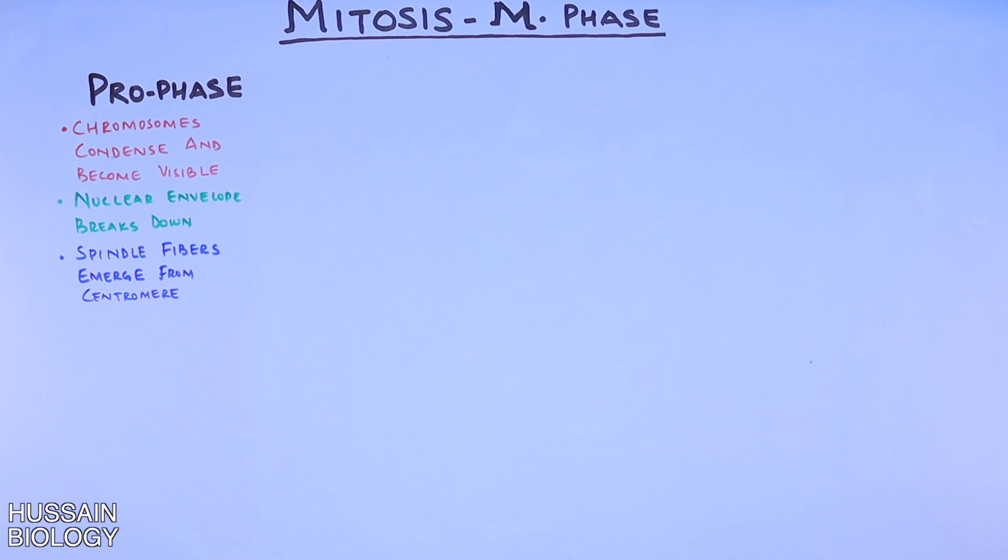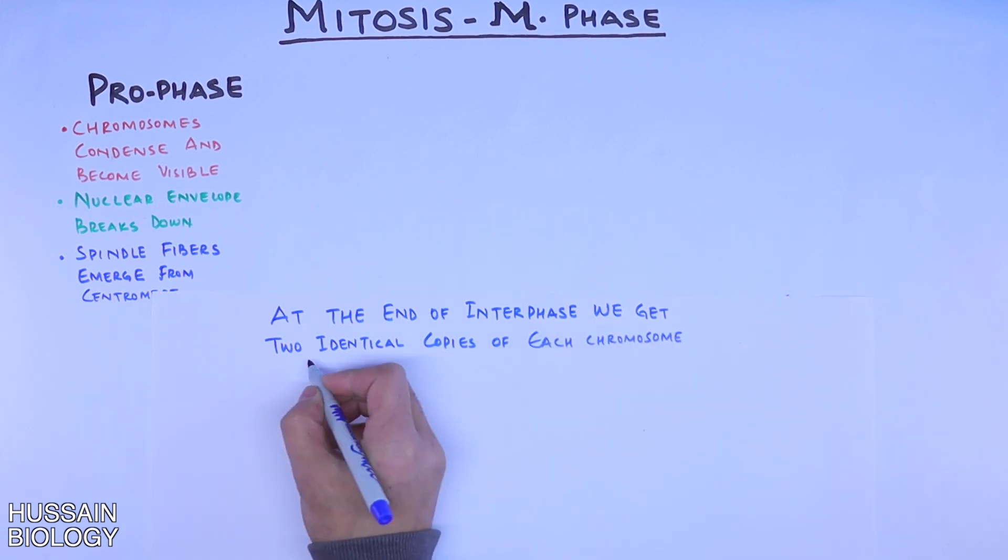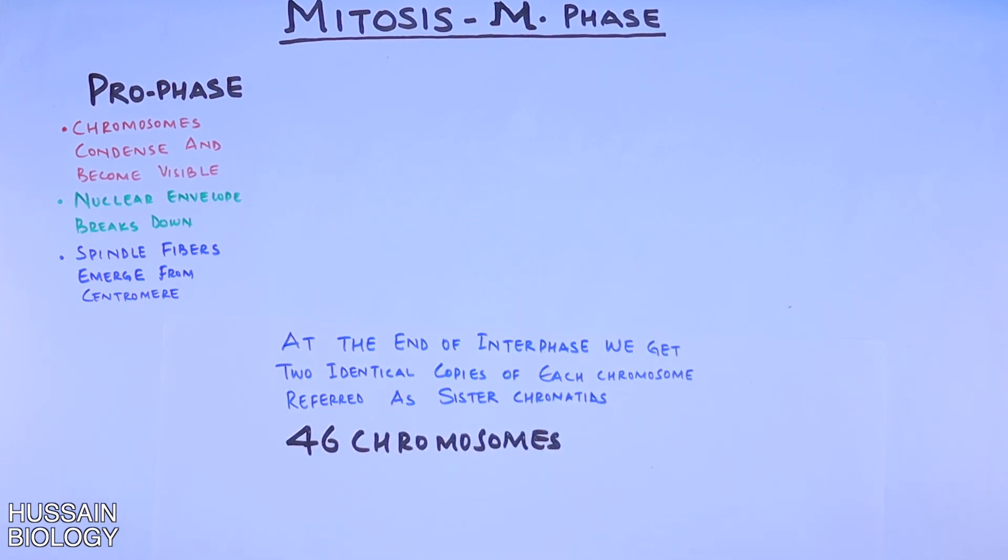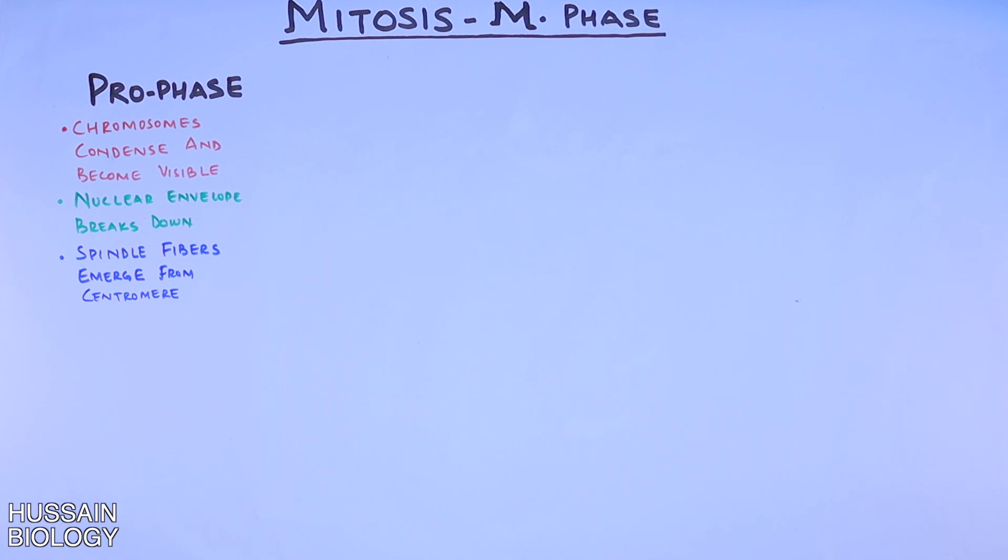But one thing to remember here is that at the end of interphase, we get two identical copies of each chromosome, referred to as sister chromatids. If we take the example of humans, we have 46 chromosomes at the end of interphase with 92 chromatids. Remember, it is 46 chromosomes but with 92 chromatids.